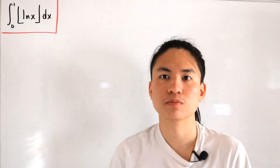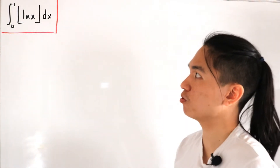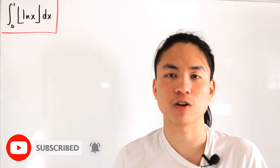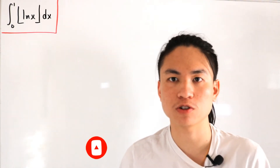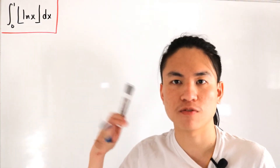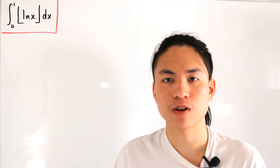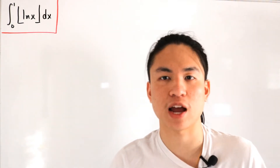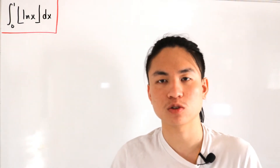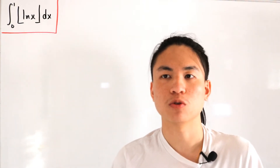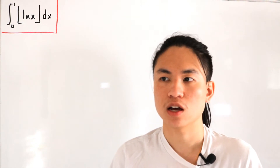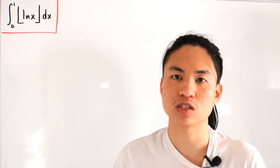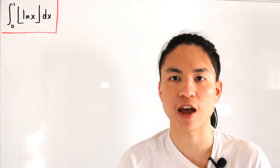Welcome back. Today we're dealing with the definite integral from 0 to 1 of the floor of the natural log of x dx. The floor function is also known as the greatest integer function. If you were to graph floor(ln x) and ln x itself, they differ because floor(ln x) acts like a step function. Integrating both from 0 to 1, the area of floor(ln x) is actually an underestimation — both are negative values.